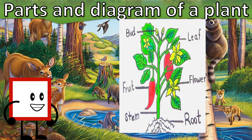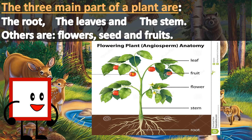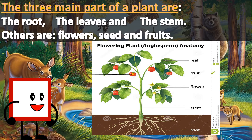Parts and diagram of the plant. The parts of the plant consist of the root, the stem, the fruit, the flower, the leaf and the bud. The three main parts of the plant are the root, the leaves and the stem. Others are the flowers, seeds and fruits.